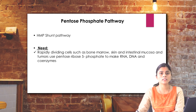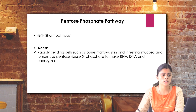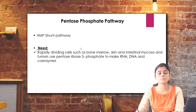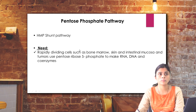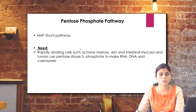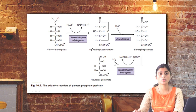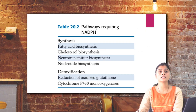It is needed because rapidly dividing cells such as bone marrow, skin, intestinal mucosa, and tumor use pentose ribose 5-phosphate to make RNA, DNA, and other coenzymes. The NADPH produced in this pentose phosphate pathway is required for important biomolecule synthesis like fatty acid synthesis, nucleotide synthesis, macrophage phagocytosis, and maintaining the reduced state of glutathione for antioxidant activity.